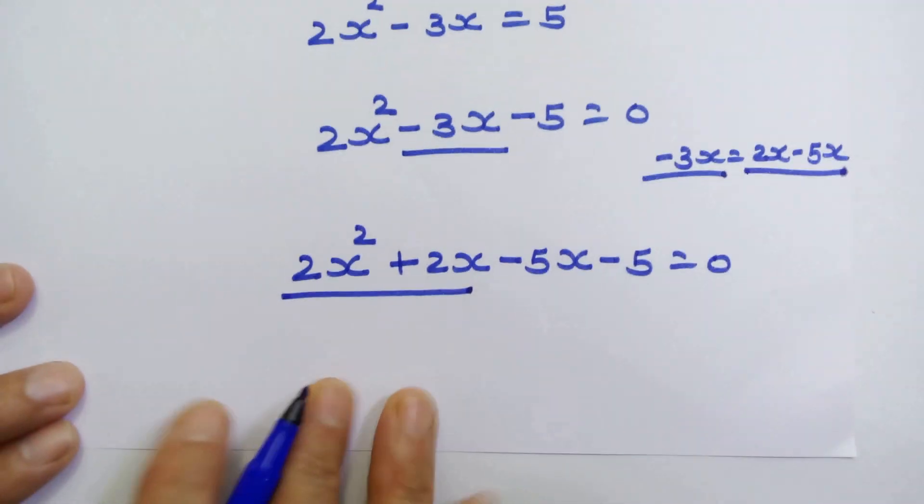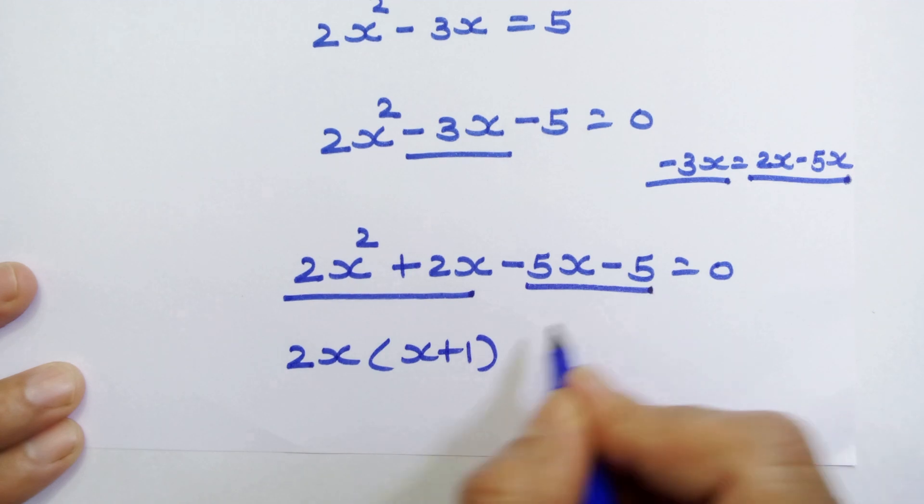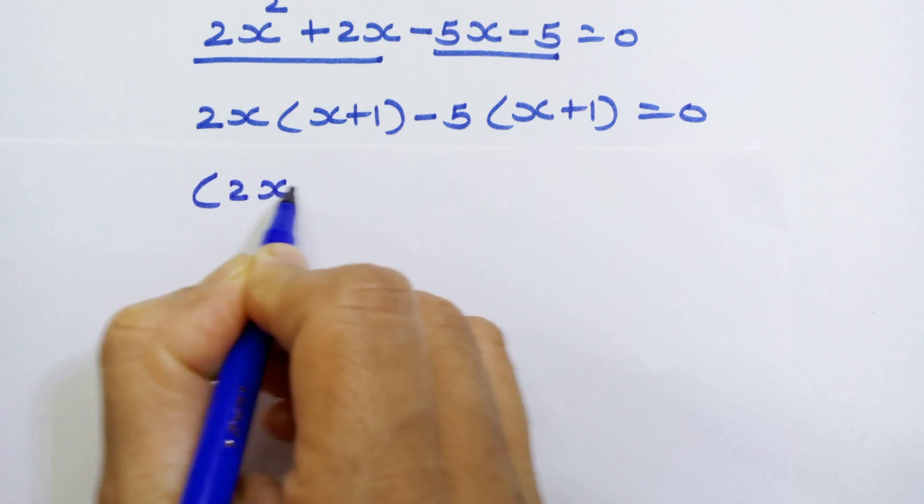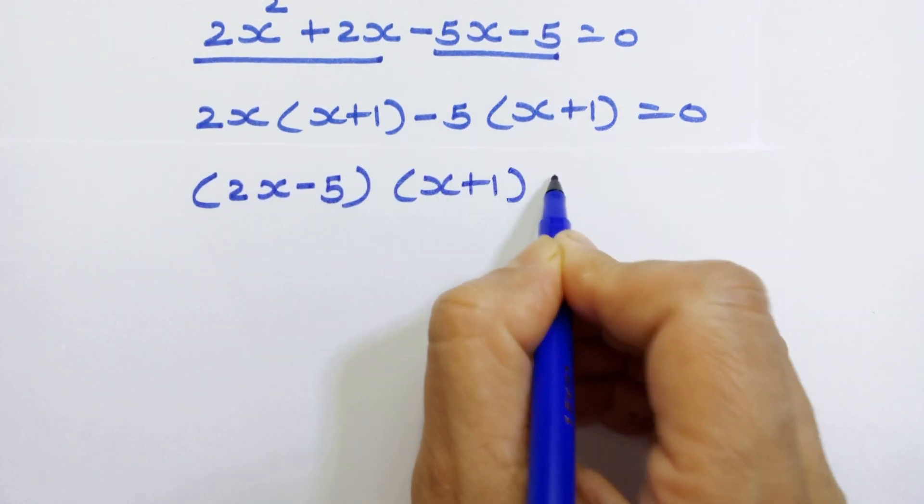Let's take 2x common from here into x plus 1. Let's take 5 common from here. So we have 2x minus 5 into x plus 1 is equal to 0.